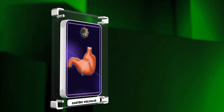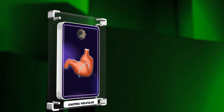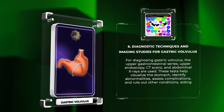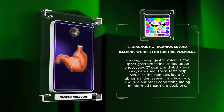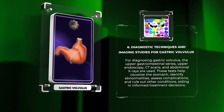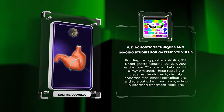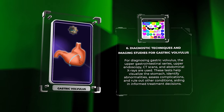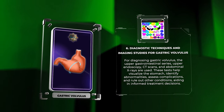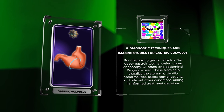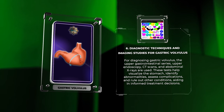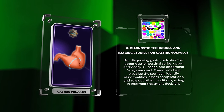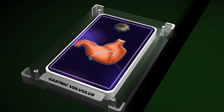For diagnosing gastric volvulus, the upper gastrointestinal series, upper endoscopy, CT scans, and abdominal x-rays are used. These tests help visualize the stomach, identify abnormalities, assess complications, and rule out other conditions, aiding in informed treatment decisions.